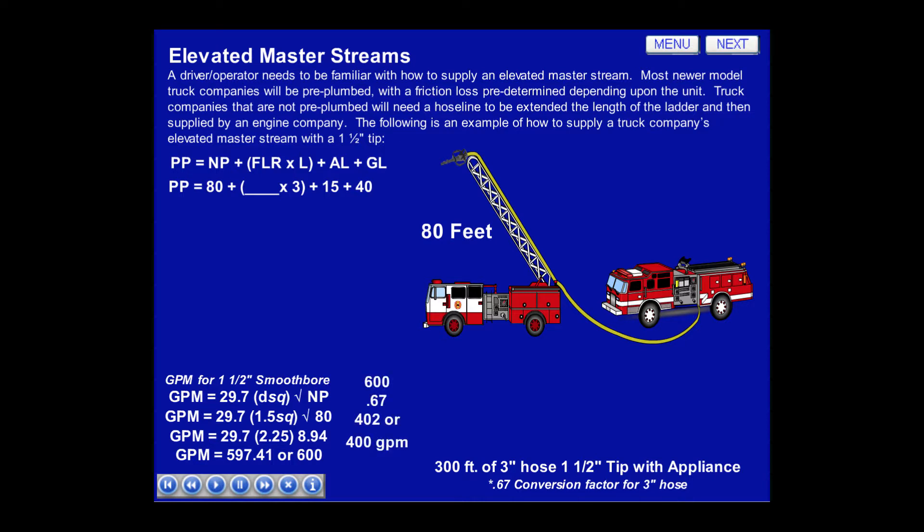Since we have 3-inch hose, we must convert it. We'll take 600 GPM and multiply it by 0.67, the conversion factor for 3-inch hose, which equals 402 — rounded to 400 GPM.